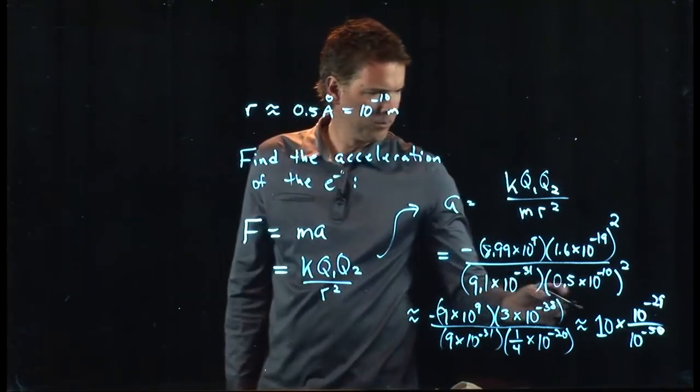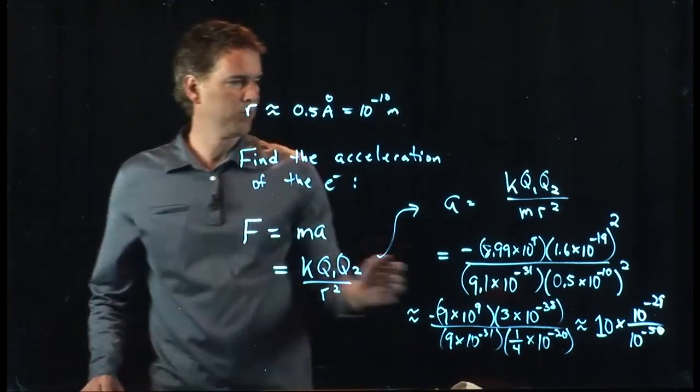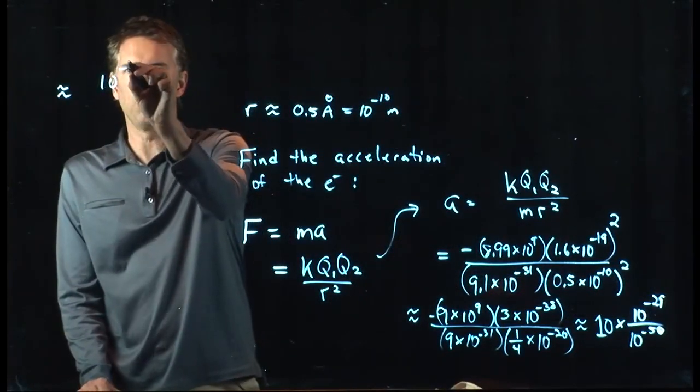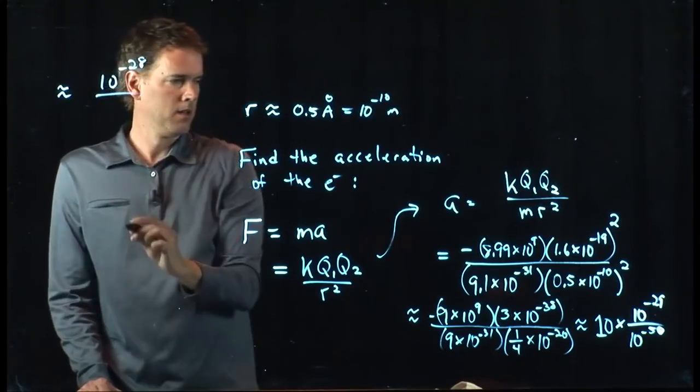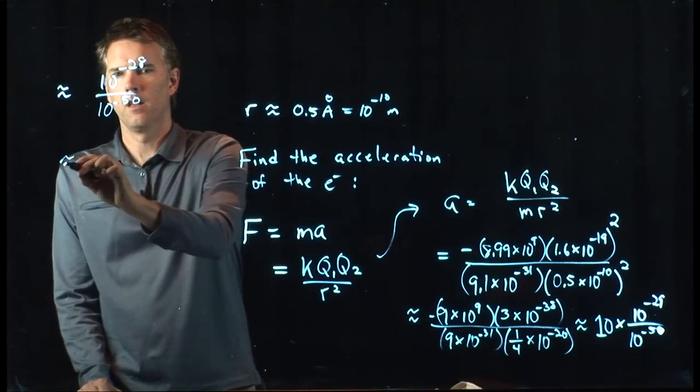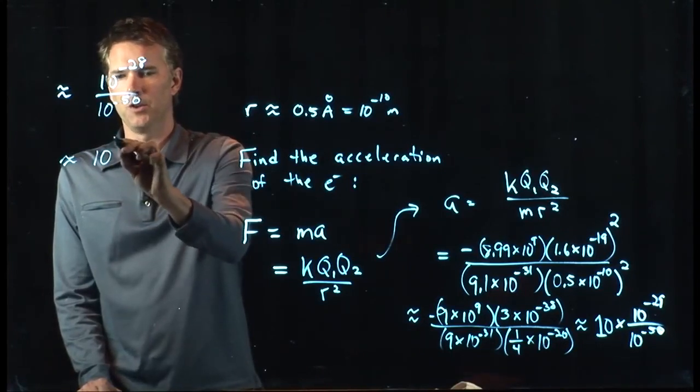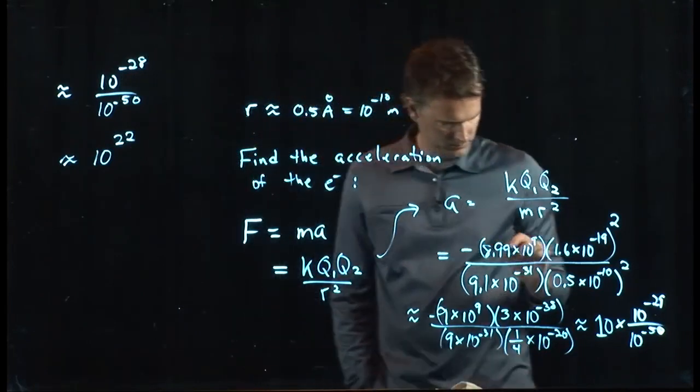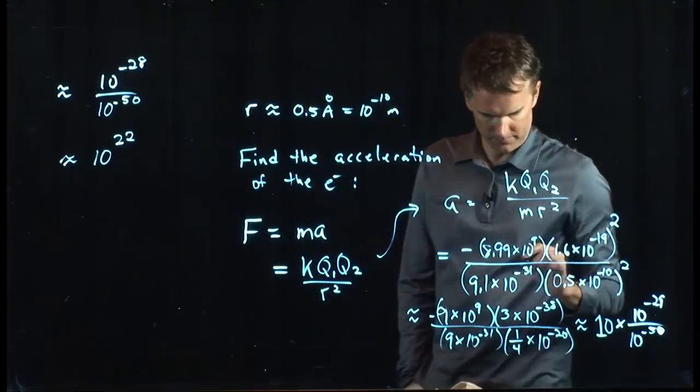And let's see what we get here. So we have a 10 times 10 to the minus 29, which becomes 10 to the minus 28 divided by a 10 to the minus 50. And so we end up with 10 to the 22. Is that right? Did we do that right?